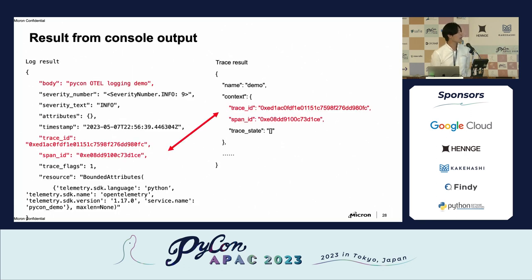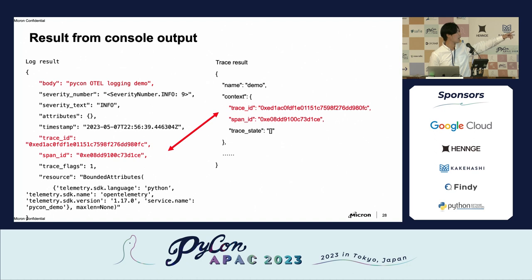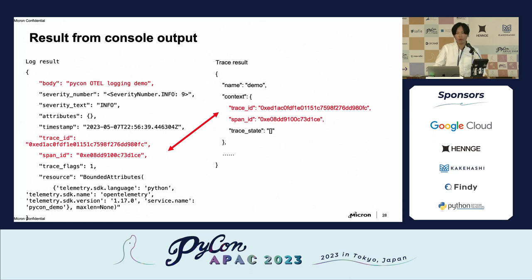Looking at the console output example — the left-hand side is the log result, and the right-hand side is the trace result. Within the log result body you can see the message we want to record. Below that we also have the trace ID and span ID. They match the right-hand side trace result. If you compare the trace IDs, they are the same, and so are the span IDs. So now we already have correlation between the log and trace.